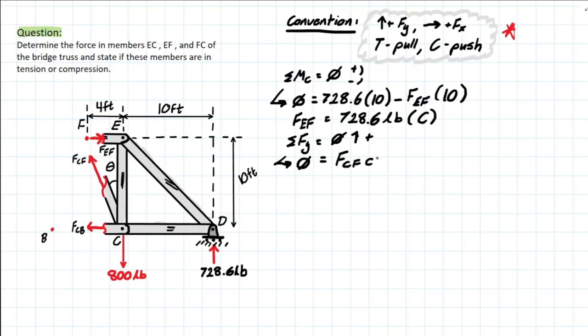And then we're also going to be looking at the negative 800 force that's going down and the positive 728.6 that we solved for earlier. What is our theta? It is going to be the tan inverse of the opposite, which is 4, over the adjacent, which is 10.